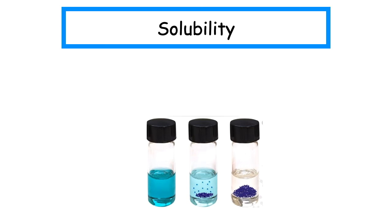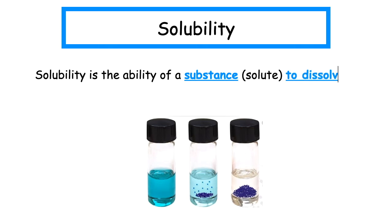The last property we look at is solubility. Solubility is the ability of a substance, which is normally known as a solute, to dissolve in a solvent, which is usually a liquid. If it is able to dissolve, we say that the substance is soluble, and if it is unable to dissolve, we say that the substance is insoluble.